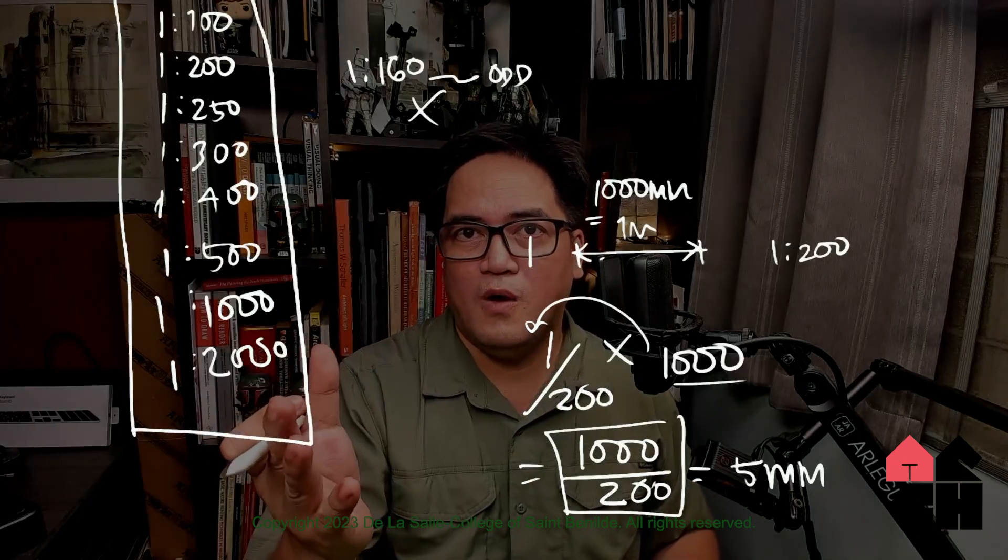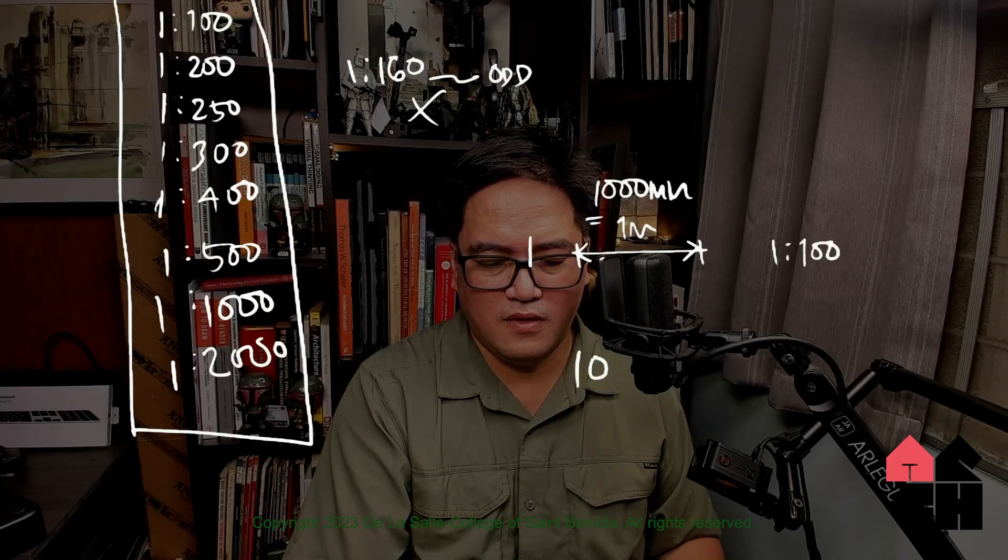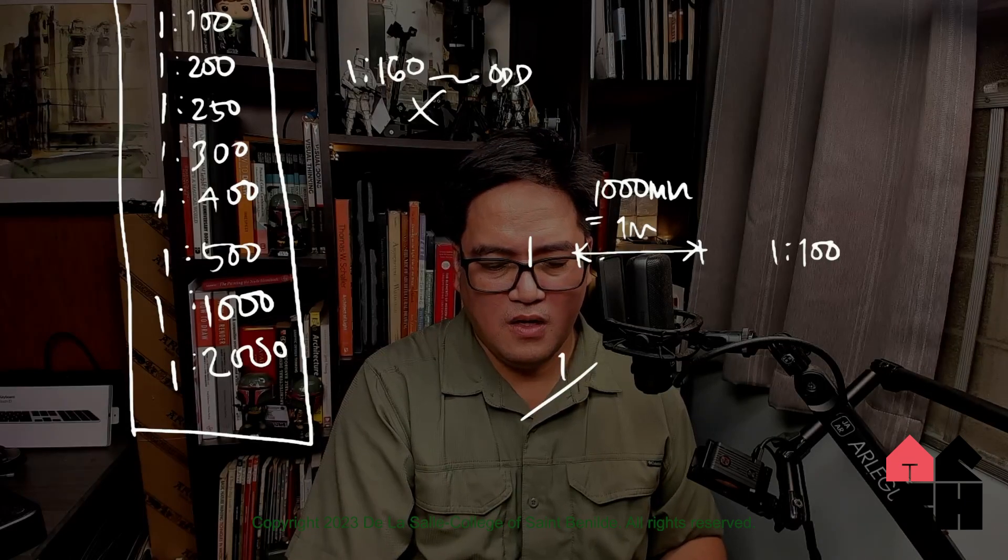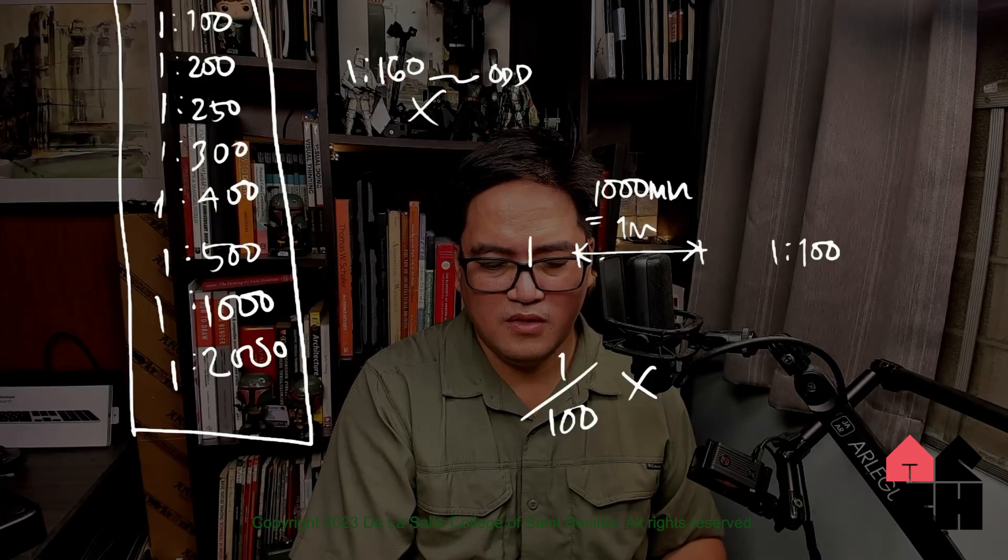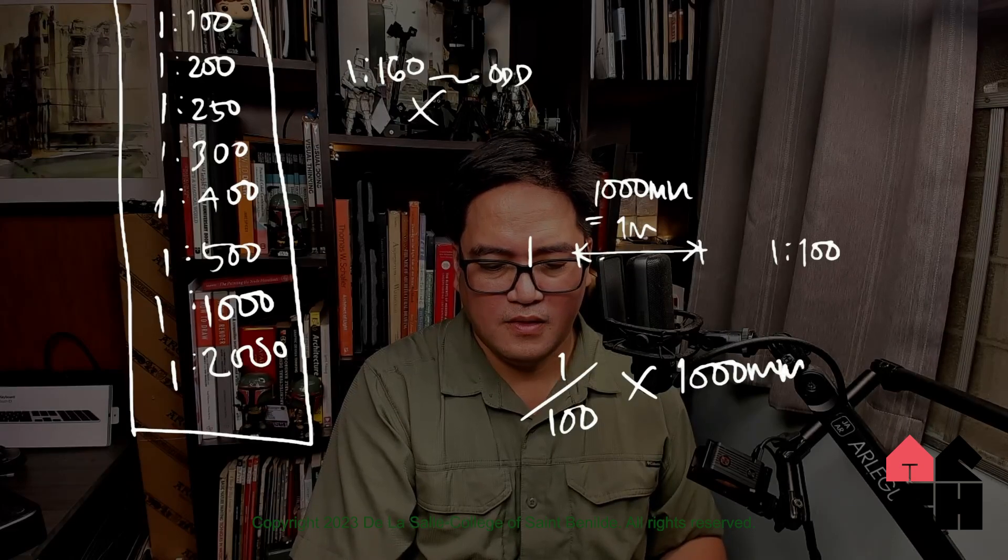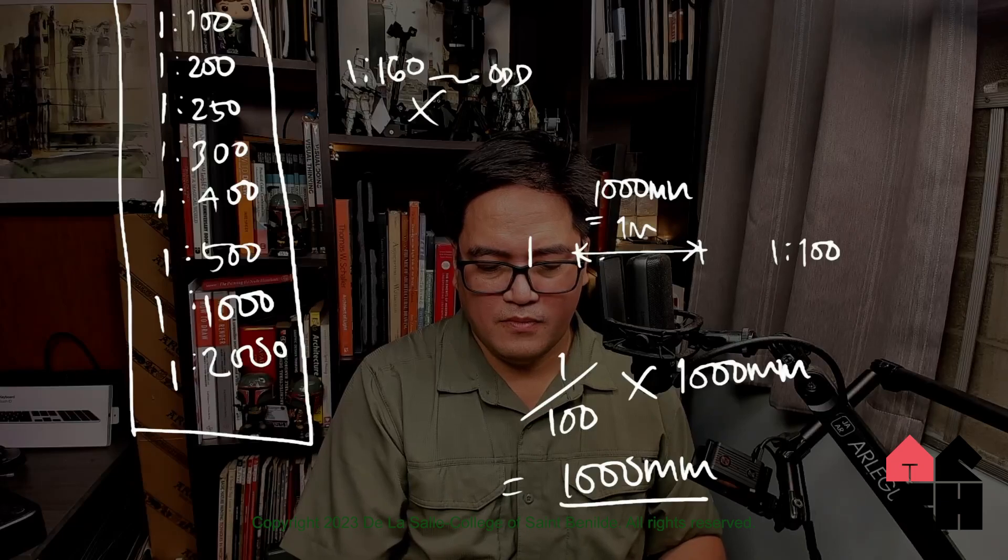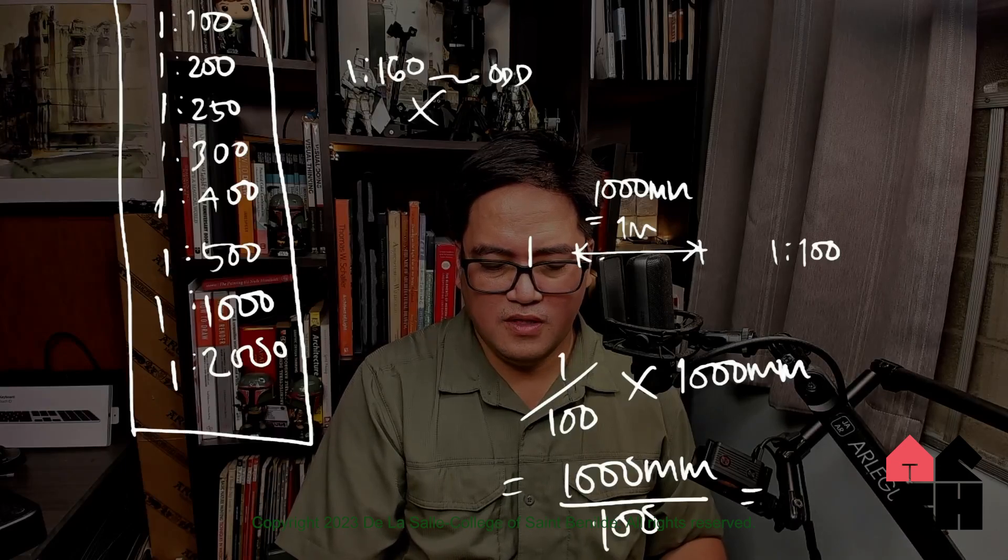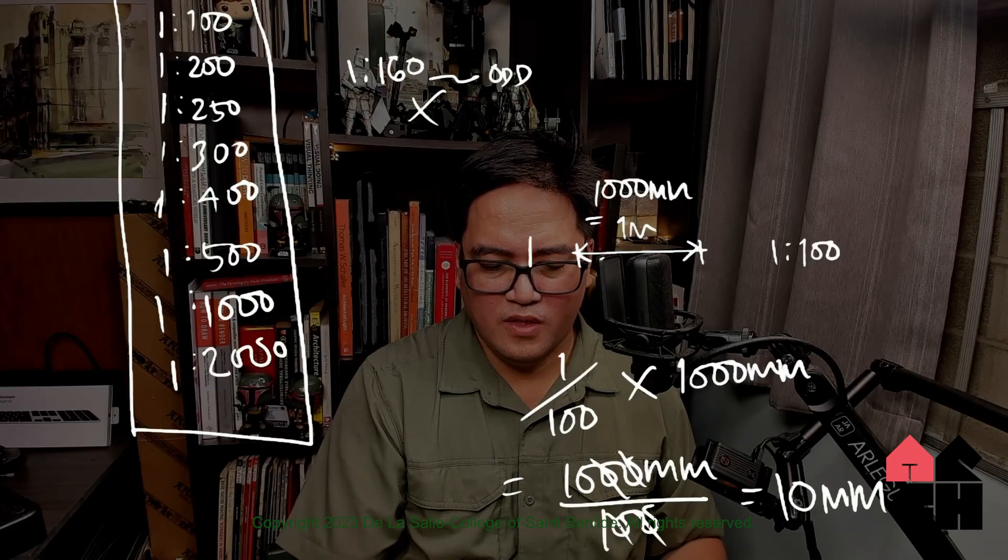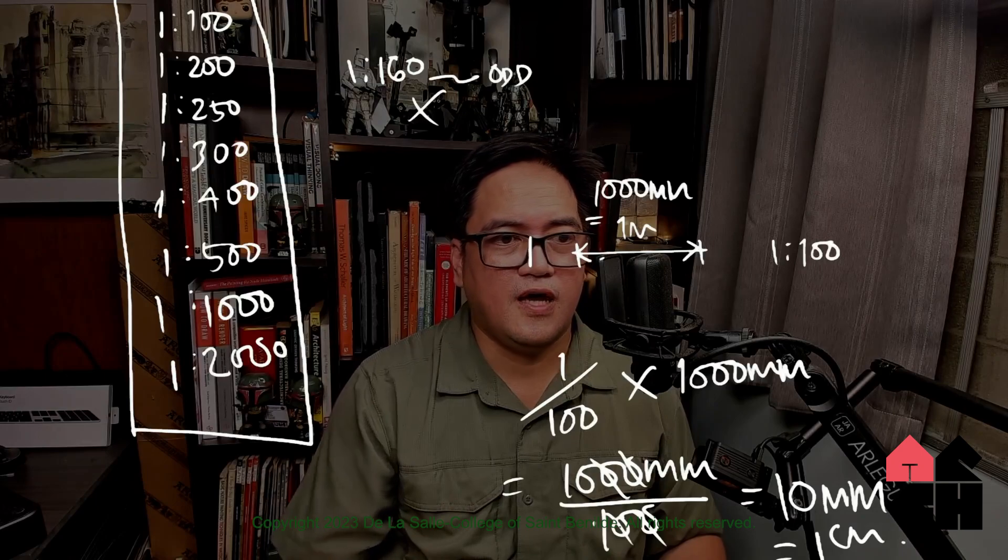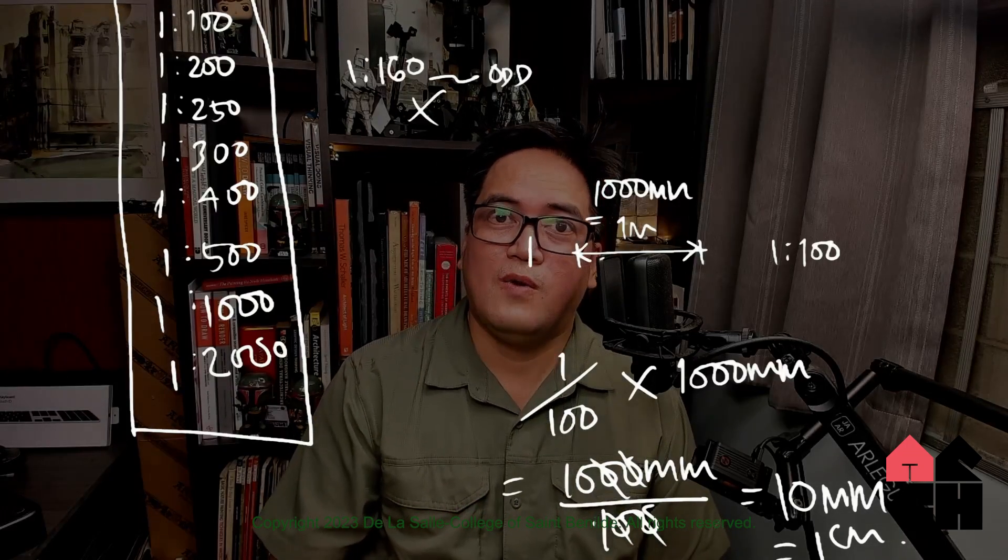What about 1 is to 100? I will factor 1 over 100 times 1,000 millimeters, because that's the unit that I want. This equals 1,000 mm over 100. If we cross these out, it would equate to 10 mm, which is equivalent to 1 centimeter. So I would draw 10 millimeters or 1 centimeter on paper.